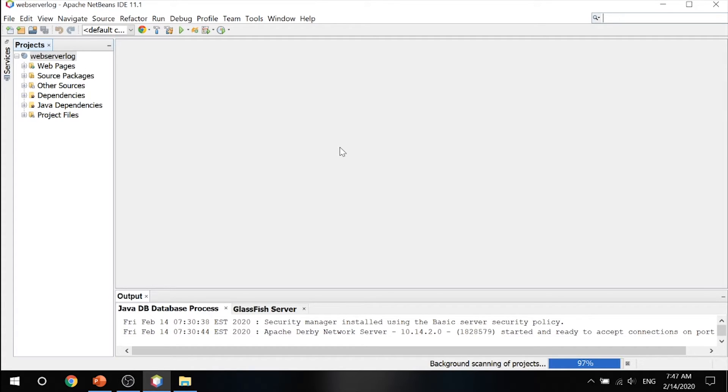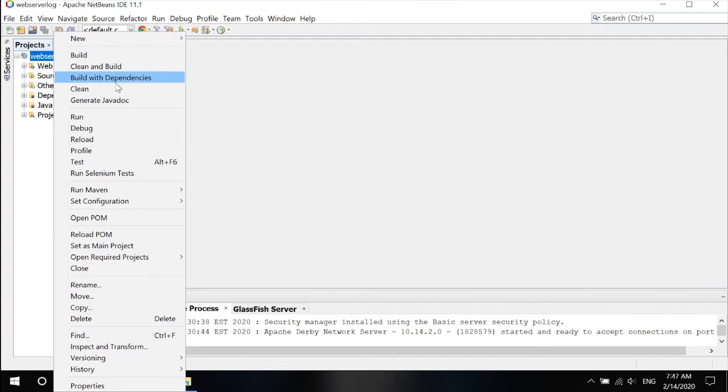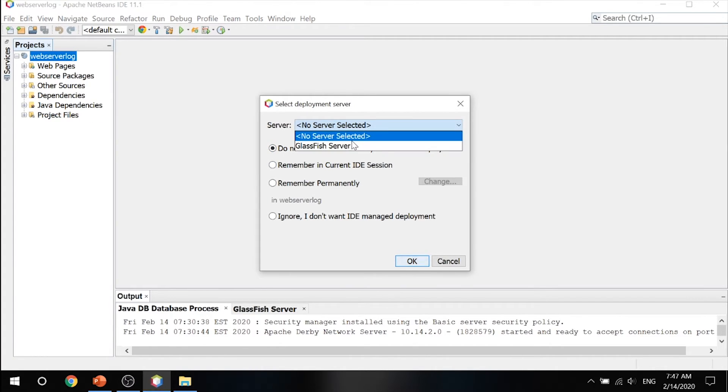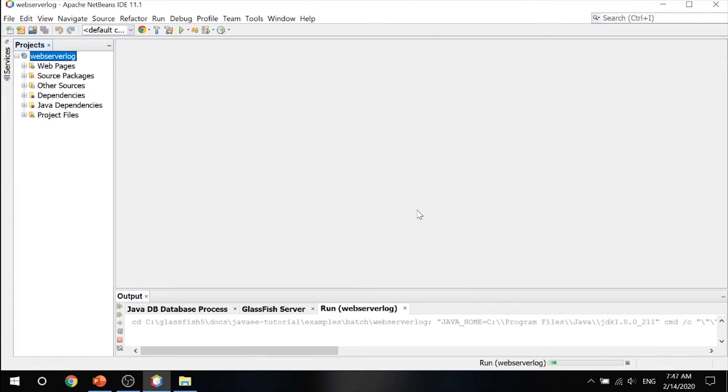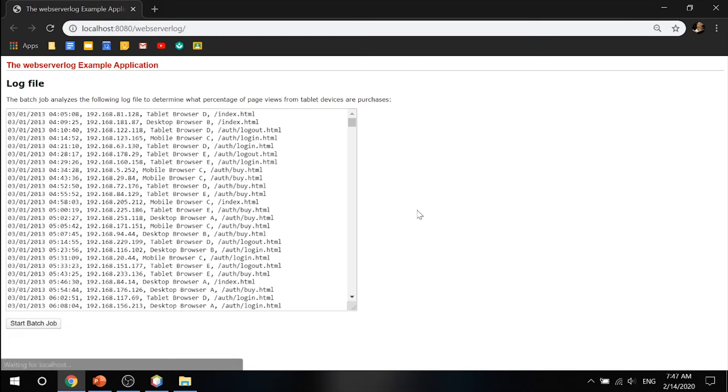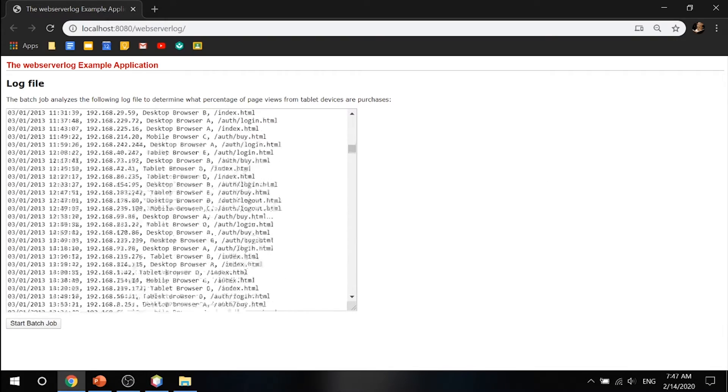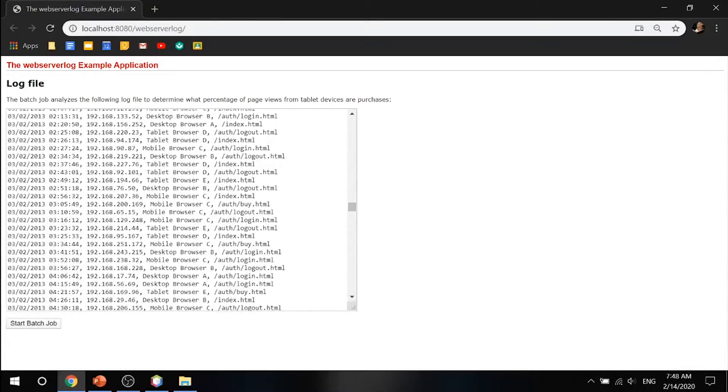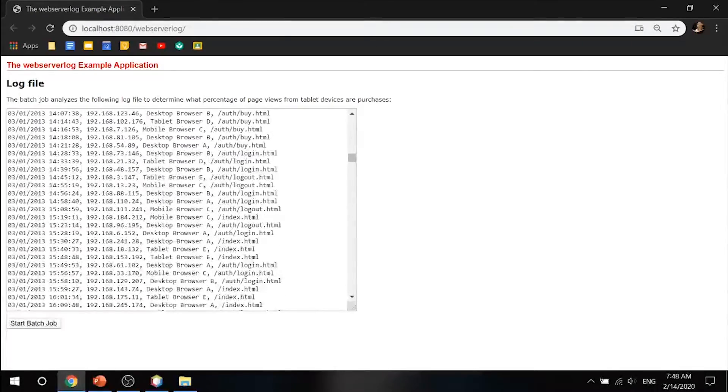So to run the web server log, all you got to do is make sure your GlassFish server is running. Go into your web server log folder, right-click that and click on run. Make sure you select your GlassFish server and click OK. So what should happen is a little dialogue box just pops up. This checks all the mobile and tablet browsers and stuff, and these are all the mobile, desktop, and tablet users that are using our website.